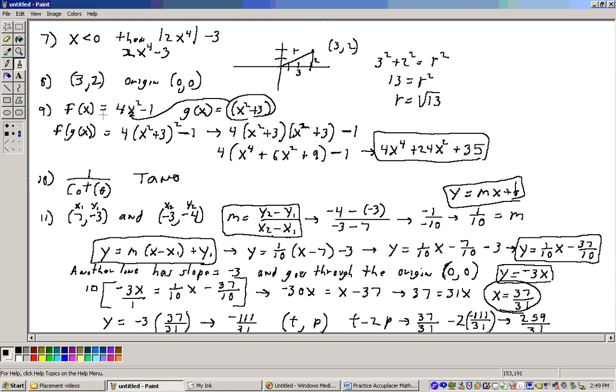Problem 9, it says f(x) equals 4x squared minus 1 and g(x) equals x squared plus 3. What is f(g(x))? Well, f(g(x)) means take this g(x) function, which is x squared plus 3, and substitute it into x on the f function. So this would give us 4 times (x squared plus 3), that gets squared then, minus 1.